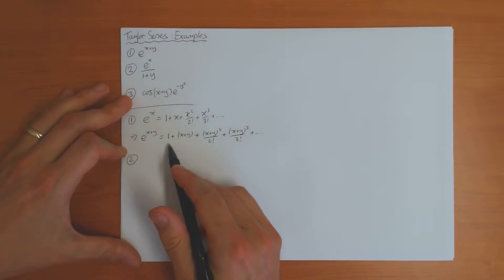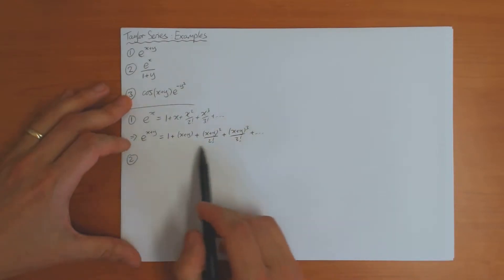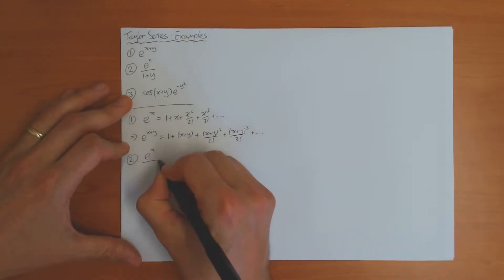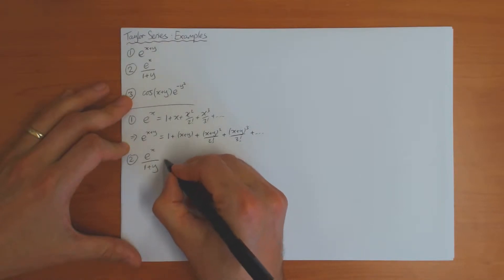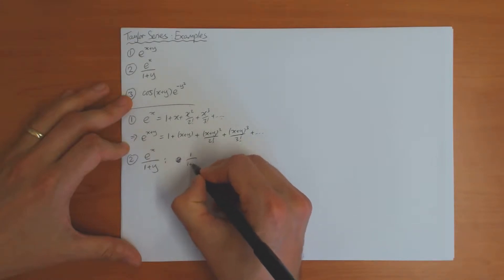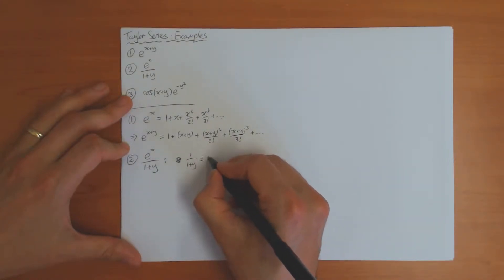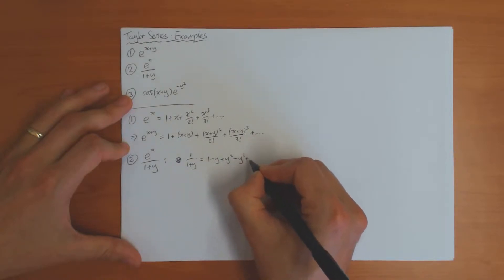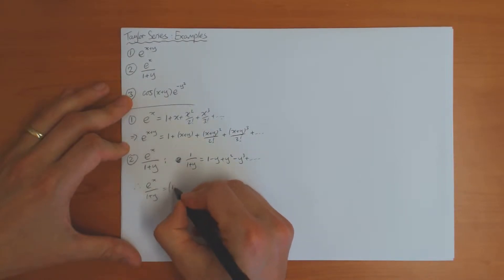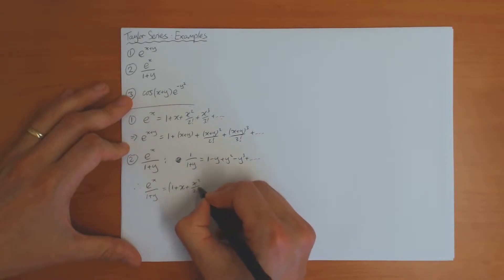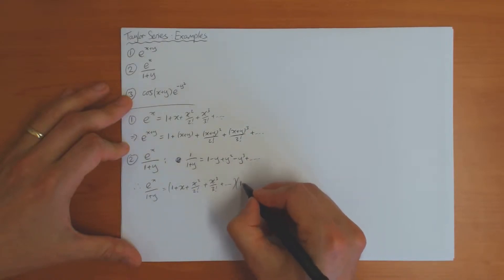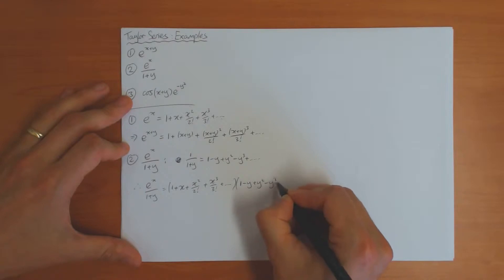You can check that this agrees with the definition derived in the previous video, but obviously this is much easier to calculate this way. The next one is slightly more tricky: e to the x over one plus y. Here you use the fact that we know the Taylor series for e to the x and also the Taylor series for one over one plus y, which is one minus y plus y squared minus y cubed plus dot dot. So therefore, e to the x over one plus y is one plus x plus x squared over two factorial, times one minus y plus y squared minus y cubed and so on.